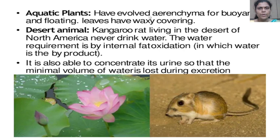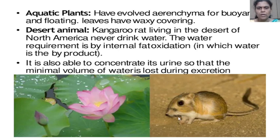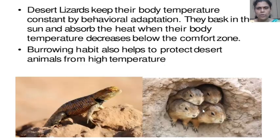Aquatic plants have evolved aerenchyma for buoyancy and floating, and leaves have a waxy covering. Desert animals: the Kangaroo Rat, living in the deserts of North America, never drinks water. Its water requirement is met by internal fat oxidation, in which water is a byproduct. Here we see a kangaroo rat and aquatic plants such as lotus. It is also able to concentrate its urine so that minimal volume of water is lost during excretion.